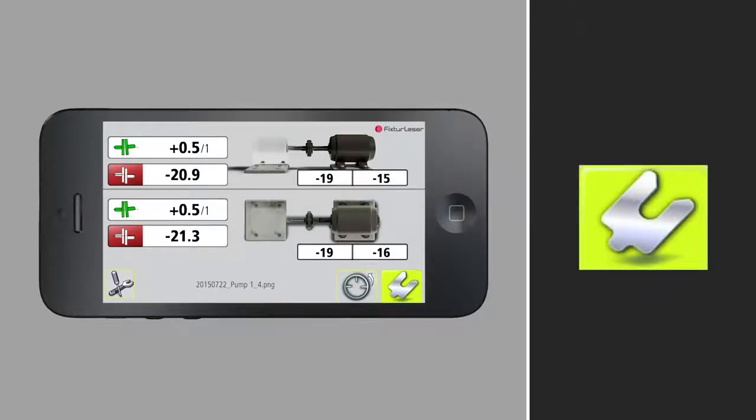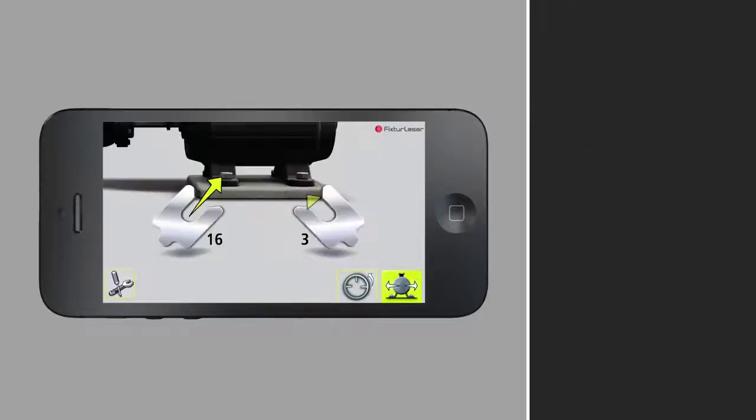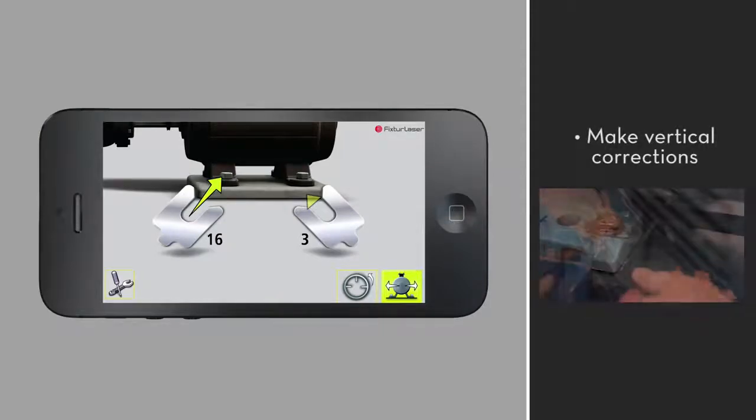To begin the vertical adjustment, tap the shim icon. Now you can make the indicated vertical corrections.